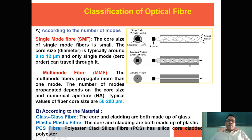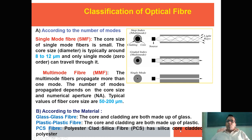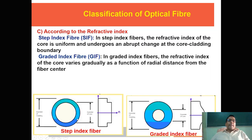According to material of core and cladding, optical fiber is classified into three types: glass-glass fiber, where both core and cladding are made of glass; plastic-plastic fiber, where both are made of plastic; and PCS fiber (Plastic-Clad Silica fiber), which has a silica core and cladding made with polyester. These are the three types of optical fiber depending on the materials of core and cladding.